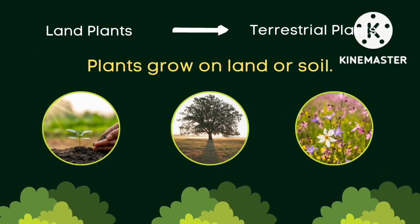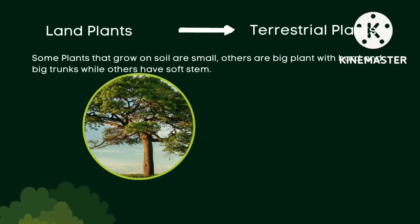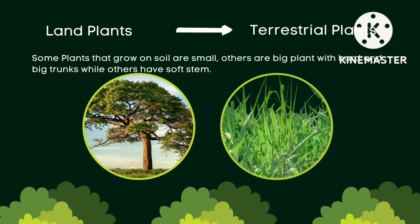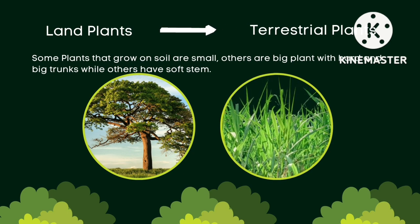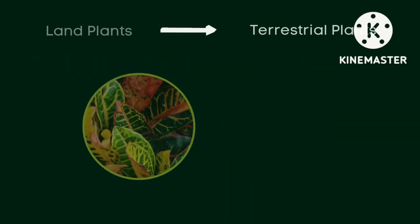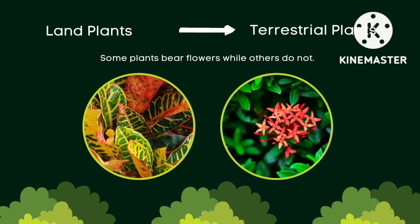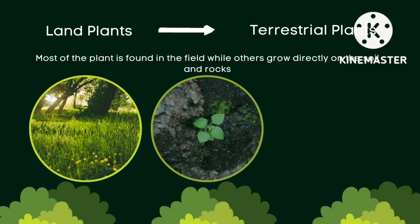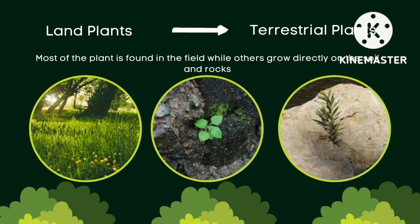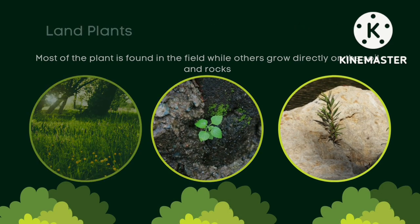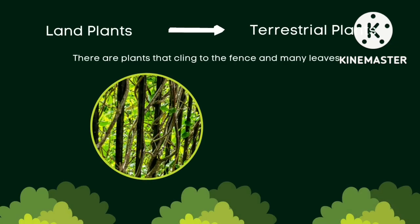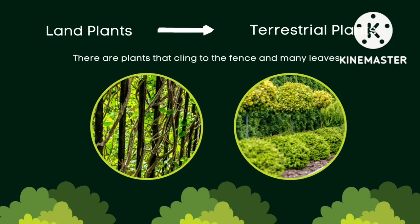Land plants are also called terrestrial plants. These plants grow on land or soil. Some plants that grow on soil are small; others are big plants with hard and big trunks, while others have soft stems. Some plants bear flowers while others do not. Most plants are found in the field, while others grow directly on the soil and rocks. There are plants that cling to fences and mend leaves.